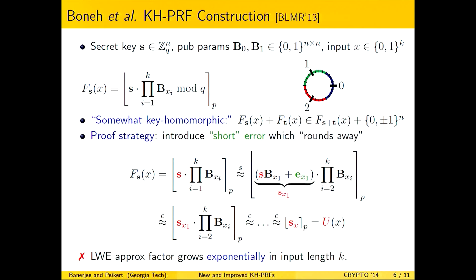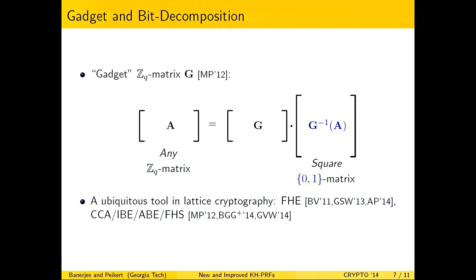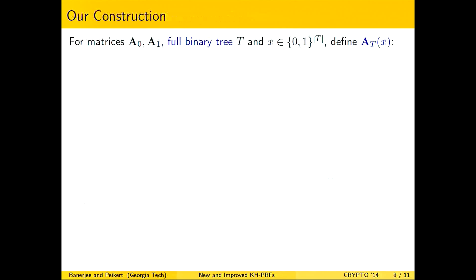Some more background on gadgets and bit decomposition: the key properties I want to stress are that we have short fat A matrices which are expanded by the G-inverse operation into square binary zero-one matrices, and the gadget matrix G essentially inverts the bit decomposition operator G-inverse. These have been a widely used tool in lattice cryptography.